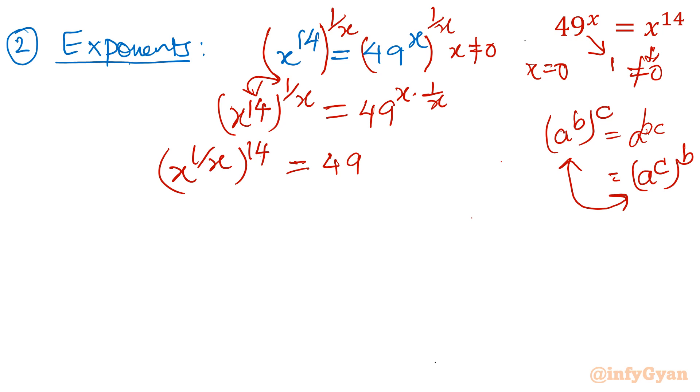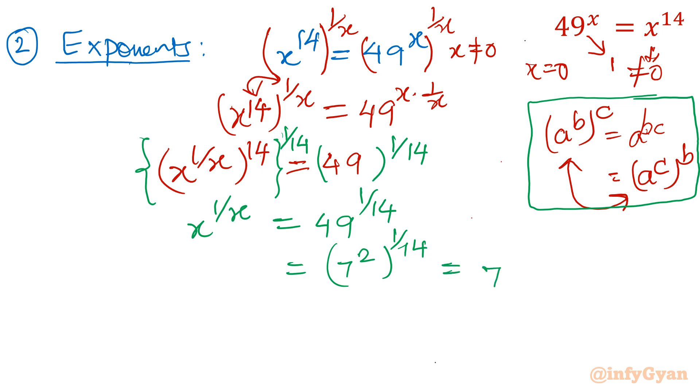Now again, same task I will do, that is I will raise both sides power 1 over 14. Now see what will happen. a^b whole power c, again same property I will use this one. I can write LHS as x^(1/x). RHS would be 49^(1/14). Now I will write this 49 as 7 square whole power 1 over 14. Now by the property, I will write 2 times 1 over 14. So it will become 7^(1/7).